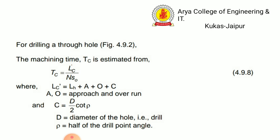For drilling a through hole, the machining time Tc is estimated from: Tc = Lc / (N × S0), where Lc = Lh + A + O + C. Here, A and O are the approach and overrun during the operation, and C = D/2 × cot(ρ), where D is the diameter of the hole and ρ is half of the drill point angle.